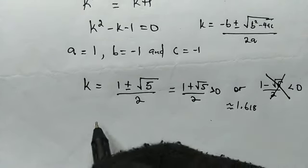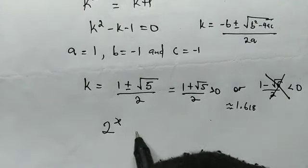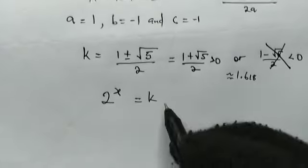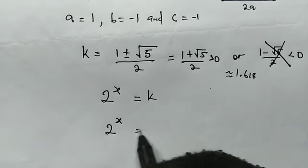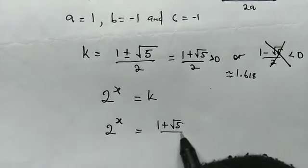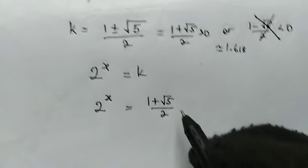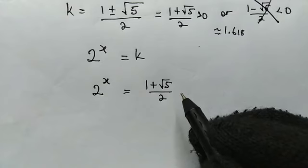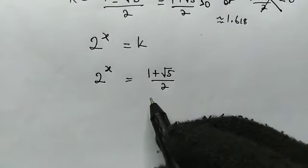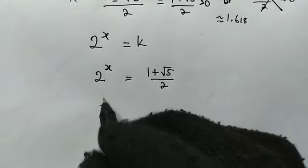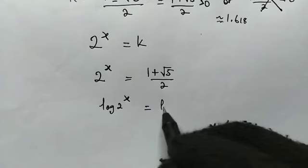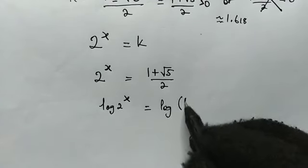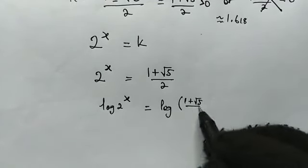So since we have found k which must be greater than 0, let us recall that 2^x equals k. So replacing k, we'll get 2^x = (1 + √5)/2. Now at this point, we're going to make use of the logarithm. Let us log both sides. We have log(2^x) = log((1 + √5)/2).